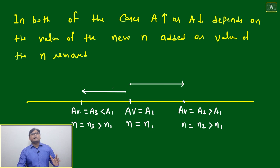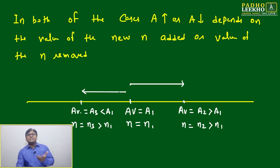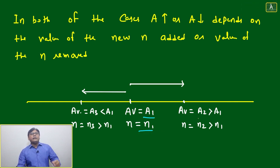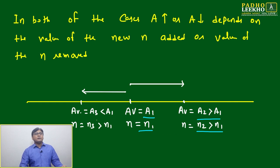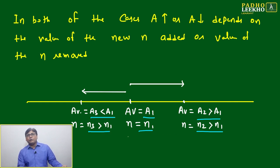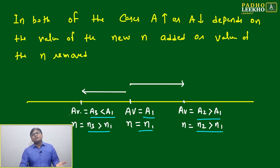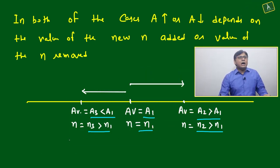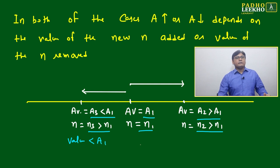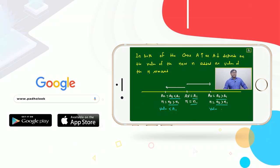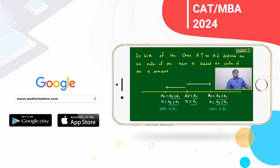The same concept can be understood through a diagrammatic representation on a number line. Take a straight line where the current average is a1 and count is n1. If you add a number on the right side (n2 > a1), average increases. If you add a number on the left side (n3 < a1), average decreases — regardless of whether n2 or n3 is greater than n1. Whatever value you add: if it is less than a1, the average will go down; if it is more than a1, the average will go up.